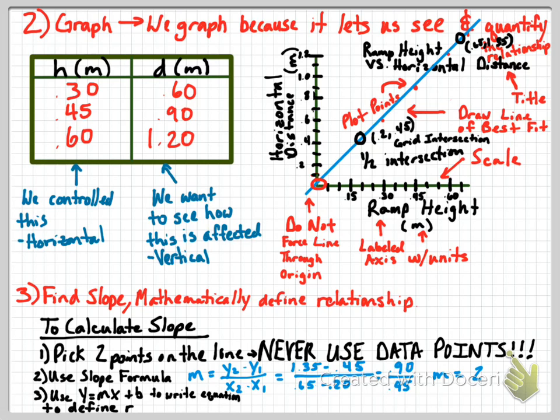And then what we do, once we have our relationship in the form of slope here, we use Y equals MX plus B to write an equation to define the relationship. So using Y equals MX plus B, Y stands for whatever's on the Y axis, and X stands for whatever's on the X axis. So on the Y axis, we have horizontal distance, which we're going to represent with D. We represent that with D for horizontal distance. And then on the X axis, we have height, and we're going to represent that with H.